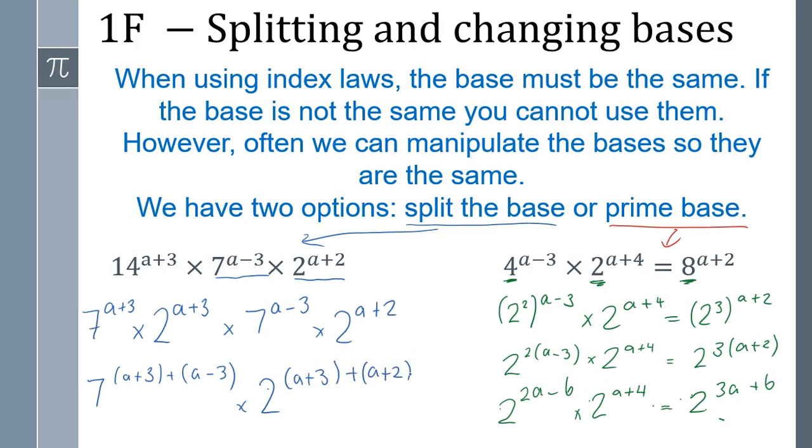Okay, and then you'd simplify so you'd end up here with two terms, just because these bases are different there's nowhere you can go. Over here you'd end up with an a equals a number because we've got the equals sign there. So I hope that makes sense, two different ways we can manipulate: splitting the base or turning it into a prime base. They'll normally be part of bigger questions, but if you see especially 4, 8, 16, 32, it's normally going back to a base of two.